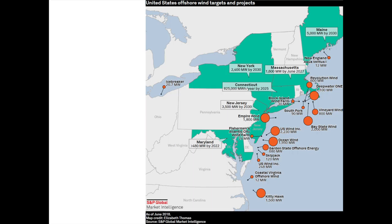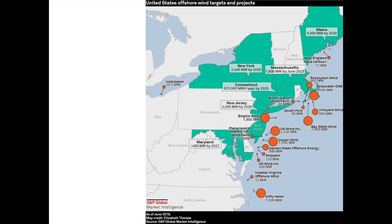This map shows the projected projects off the US East Coast as of 2018, along with the targets different states had set for their offshore wind capacity. There is also one dot in the Great Lakes — a wind farm off of Cleveland in Lake Erie that has been 13 years in development. This six-turbine wind farm would be the first freshwater wind farm in the US. It cleared another regulatory hurdle in September 2020, and both sides are thinking in terms of the potential for much larger wind development in the Great Lakes, making the fights around this pilot project particularly high stakes.